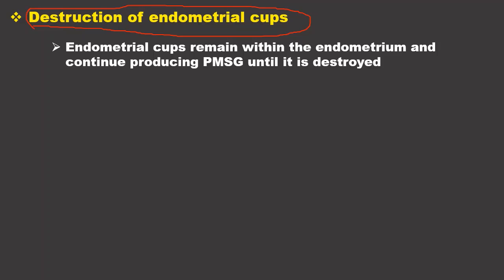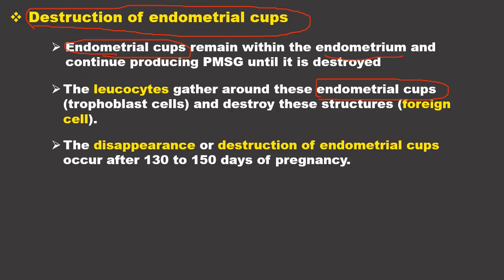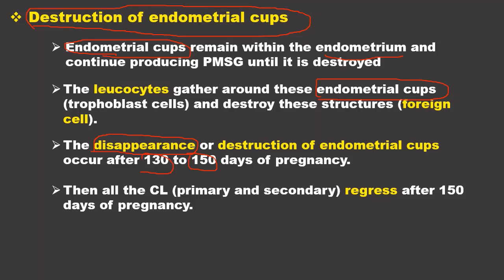The endometrial cups are made up of trophoblast cells, which are a foreign body in the maternal endometrium. Therefore, leukocytes from the maternal side aggregate around the endometrial cups and cause their destruction. When the endometrial cups are destroyed, PMSG production stops, and because there is no PMSG — no luteinization and no maintenance of corpus luteum — both the additional and primary corpus luteum undergo regression. After approximately 150 days, all primary corpus luteum in the ovary will regress.